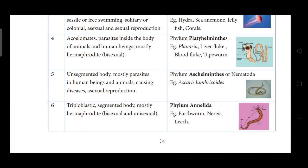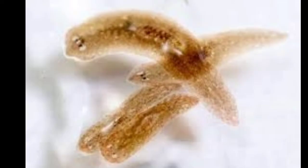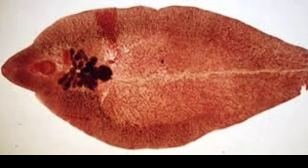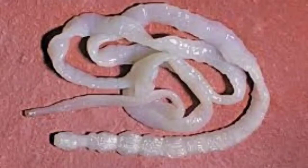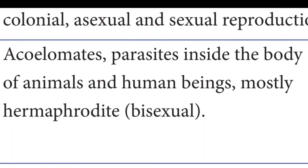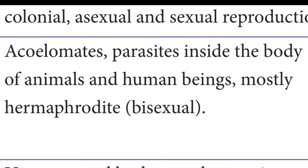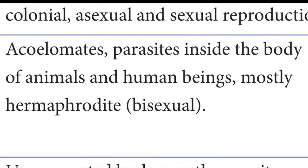Platyhelminthes — 'platy' means flat — so Platyhelminthes are flat worm-like bodied organisms. Examples include Planaria, liver fluke, blood fluke, and tapeworm.